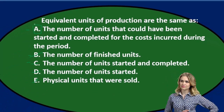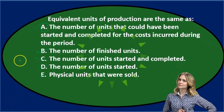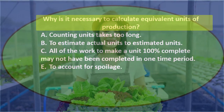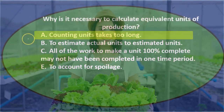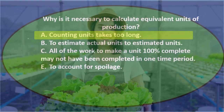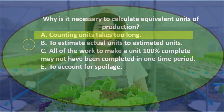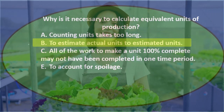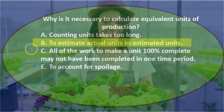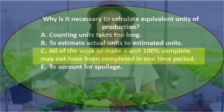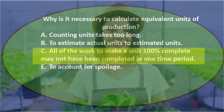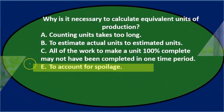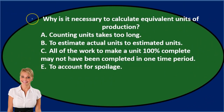Next question: why is it necessary to calculate equivalent units of production? A) counting units takes too long, B) to estimate actual units to estimated units, C) all of the work to make a unit 100% complete may not have been completed in one time period, or E) to account for spoilage.